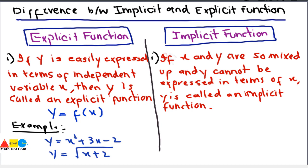This is the definition of the implicit function. When x and y are so mixed up and y cannot be separated from the independent variable x, then we can say that y is called an implicit function. An implicit function can be denoted as f of x, y equals 0. This is the representation of the implicit function that makes it different from the explicit function.